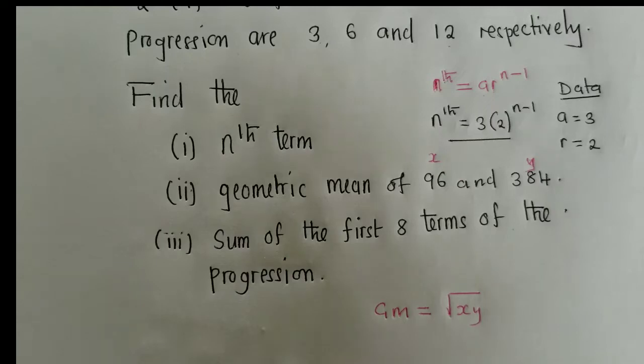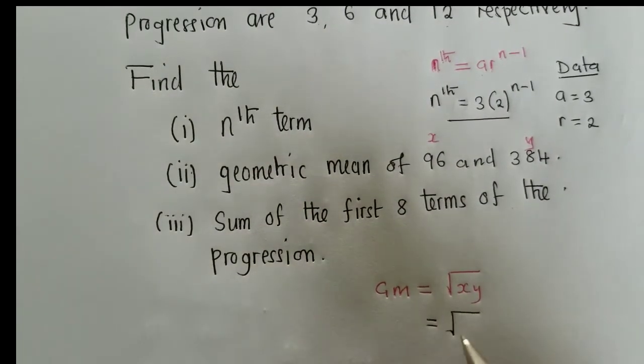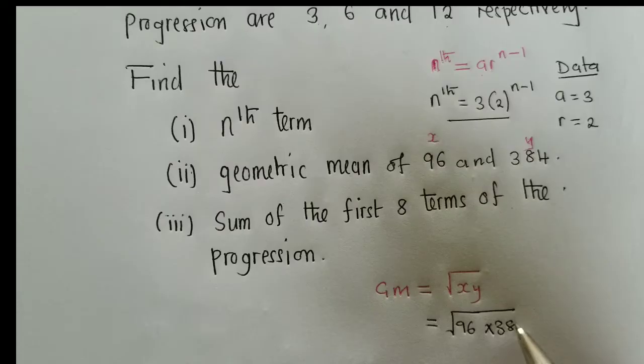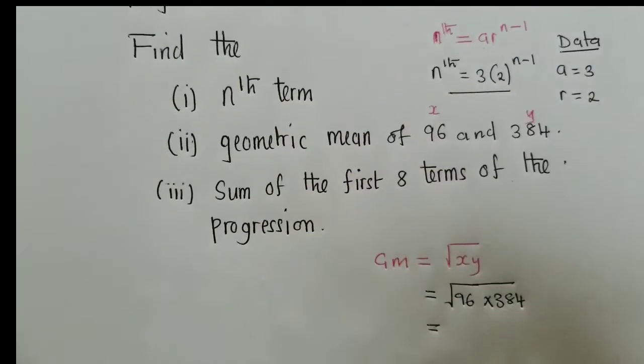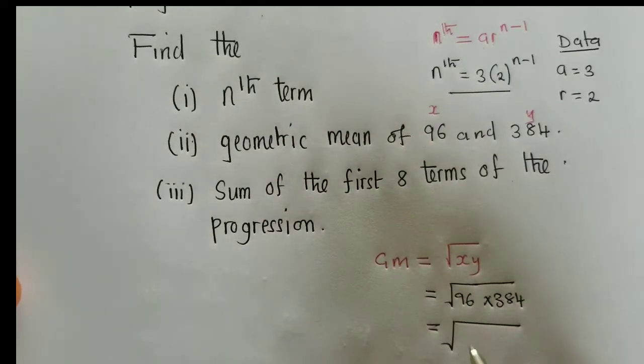That means you've answered. So it would be equal to root of 96 times 384. So when we multiply here, what are we getting? Let's try to work it out and see what we're getting. So here we are simply getting 36,864.